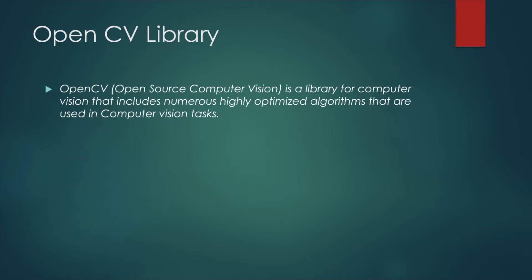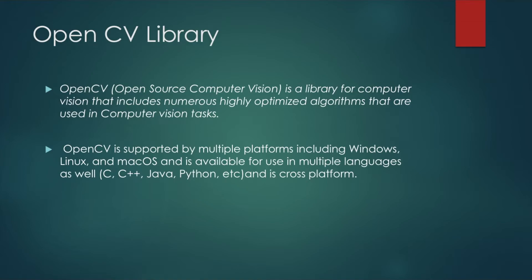To do all these operations we need a library. Python provides OpenCV for this. The prerequisites are that you need to be familiar with Python, because this library works with both Python and C++. It is originally written in C++ and on top of that it provides a Python wrapper. So the prerequisites are: be well-versed in Python or C++, and also understand numpy arrays. OpenCV is a library for computer vision that includes numerous highly optimized algorithms used in computer vision tasks.